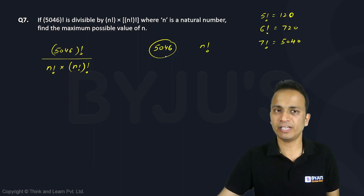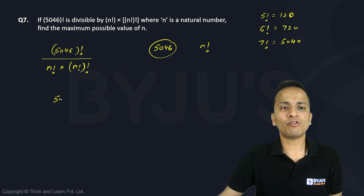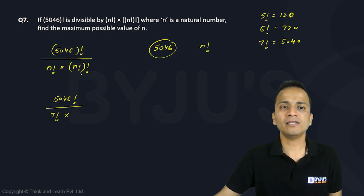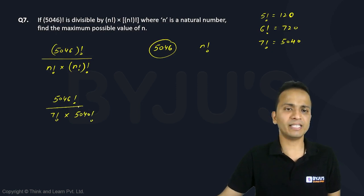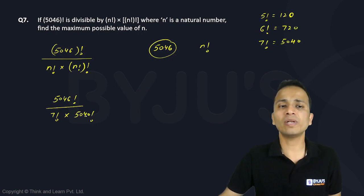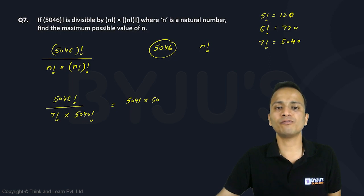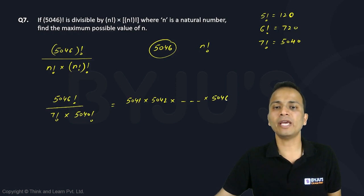So with n = 7: we have 5046 factorial divided by 7 factorial — which is 5040 — and also divided by 5040 factorial. When we divide 5046 factorial by 5040 factorial, a lot of terms cancel, and in the numerator we are left with 5041 × 5042 × 5043 × 5044 × 5045 × 5046. In the denominator we are left with 7 factorial.